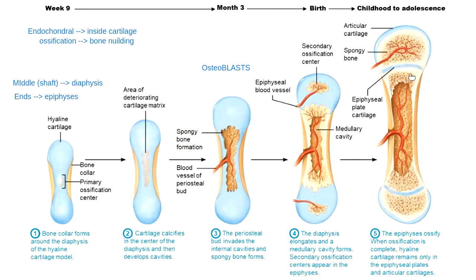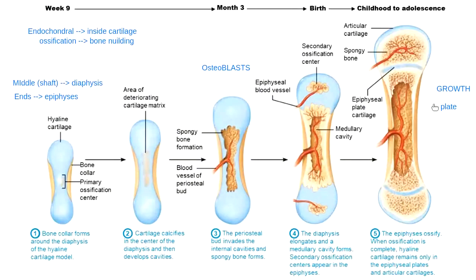Both epiphyses don't start building bone until the blood vessel comes in with osteoblasts. From the time of birth through childhood and adolescence, we keep building bone tissue in the epiphyses. We also have the epiphyseal plate — also called the growth plate — made of cartilage. This growth plate closes around age 18 in females and closer to age 21 in males. When it closes, it becomes what we call the epiphyseal line.